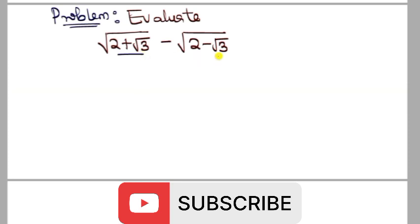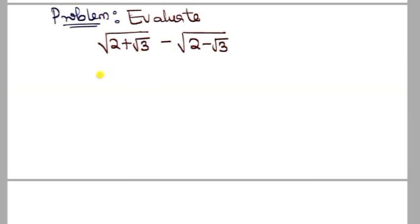You can easily see that the values under the roots are conjugates of each other. So let's give names to these values and see what that does. Let's call the first one a.